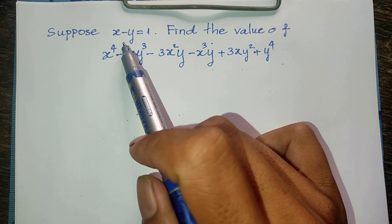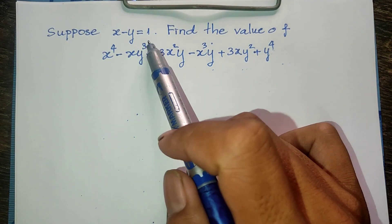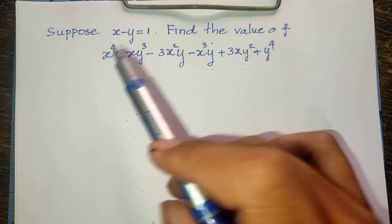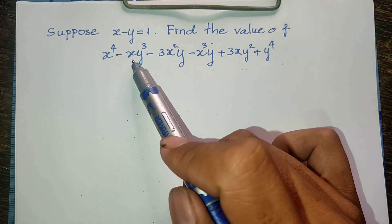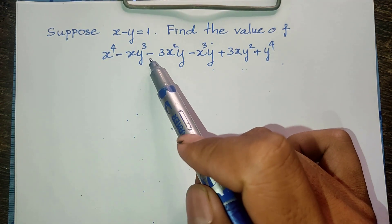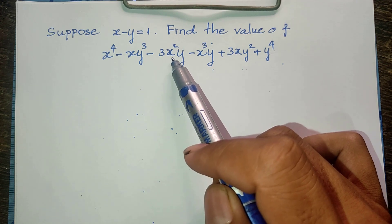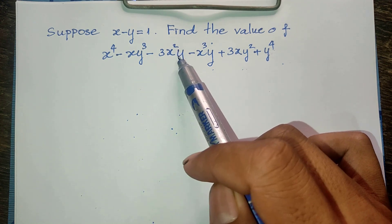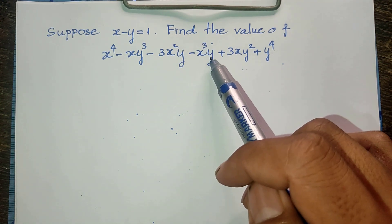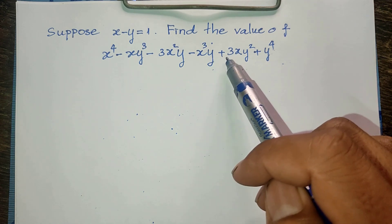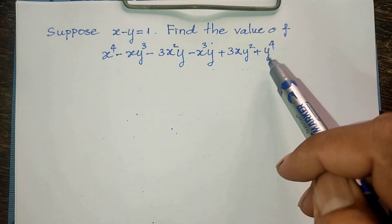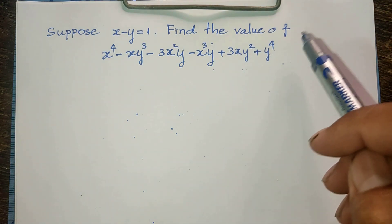Suppose x minus y is equal to 1. Find the value of x power 4 minus x times y power 3, minus 3 times x squared times y, minus x power 3 times y, plus 3xy squared, plus y power 4.